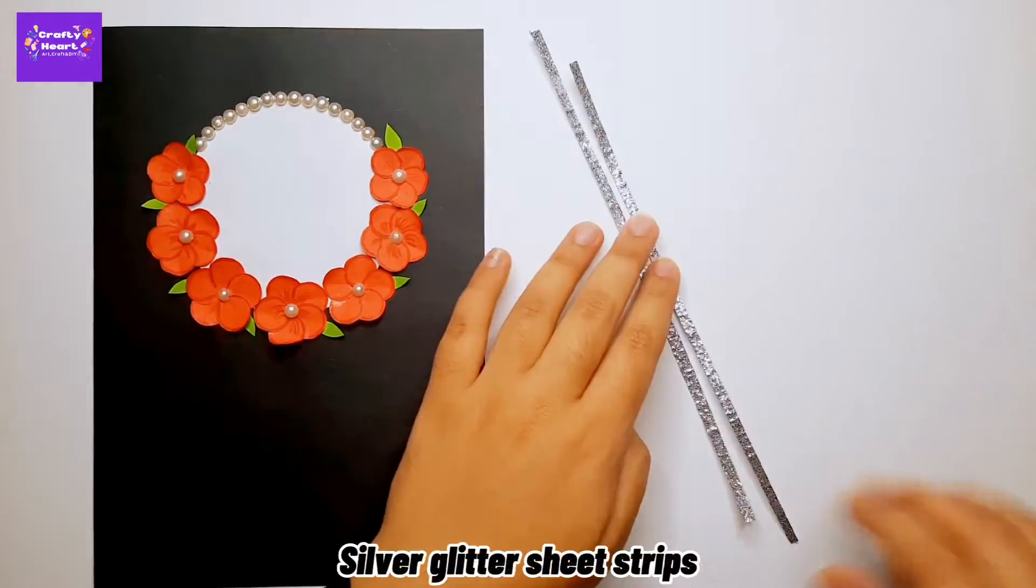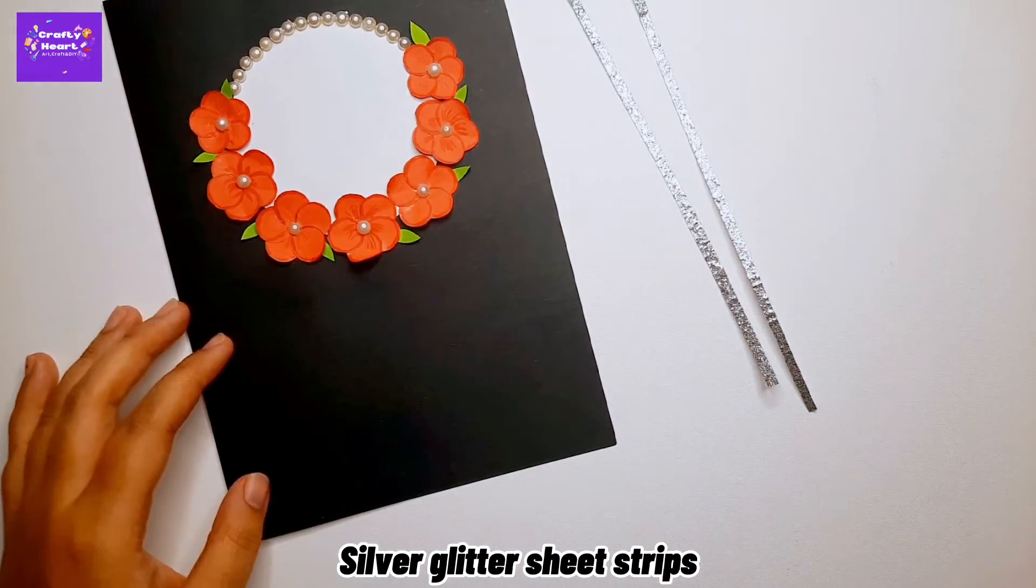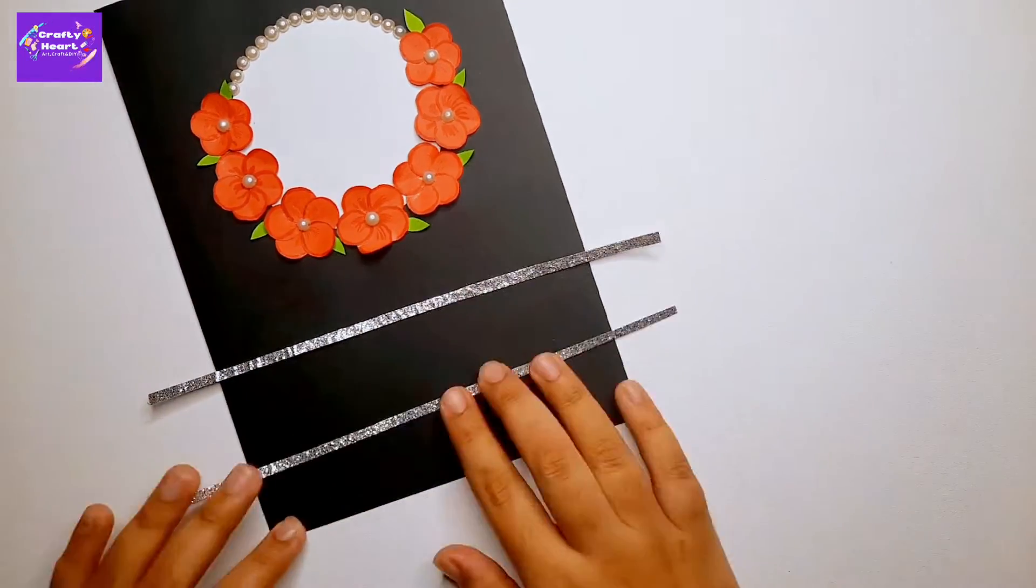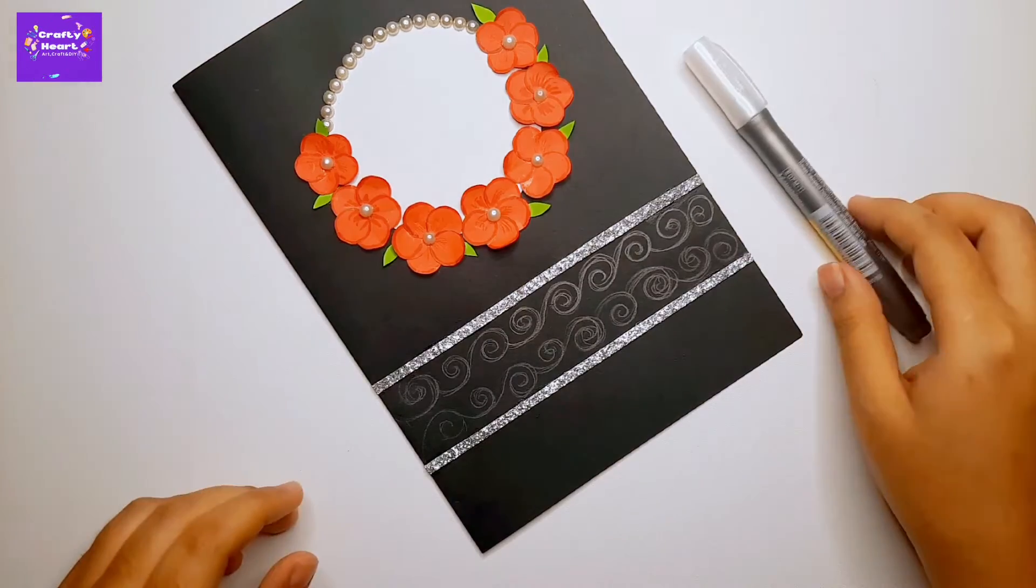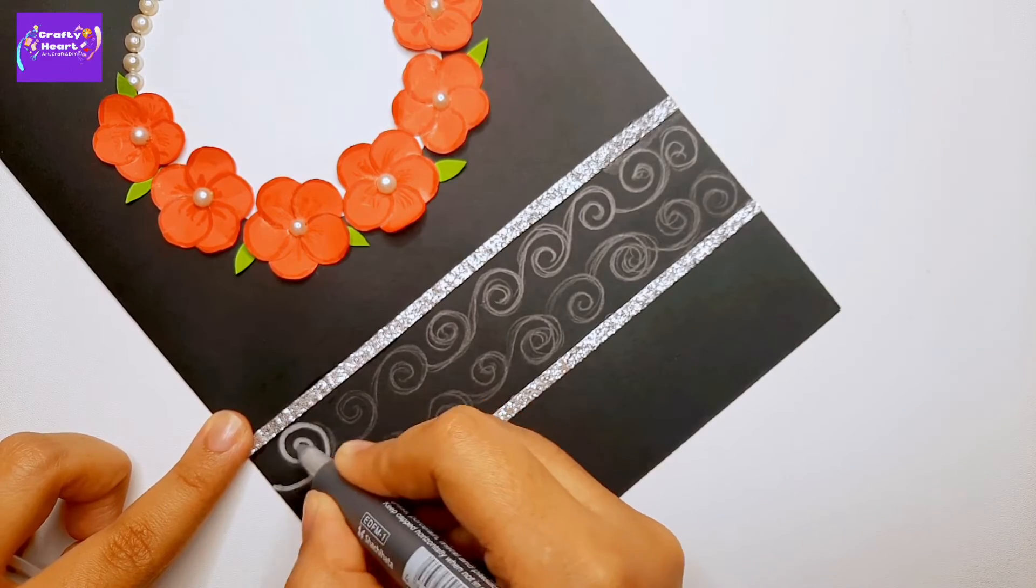Now I'm gluing strips of silver glitter sheet on the card like this. Using silver marker here I'm adding more details.